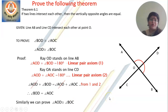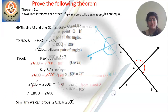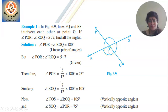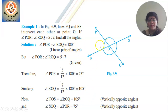After this, we will look into a few problems from exercise 6.1. This is a solved example from the textbook. In figure 6.9, lines PQ and RS intersect each other at O, and if the ratio of the angles POR to QOR is given as 5 to 7, you have to find all the angles.